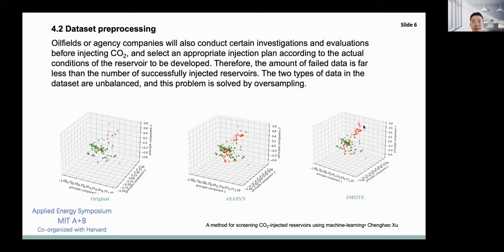Therefore, the amount of failed data is far less than the number of successfully injected reservoirs, and the original data set has a certain imbalance, which is not a good thing for the training of machine learning models and will result in one-sided and inaccurate learning results. A certain way is needed to expand the weaker class data. Two methods are used, namely ADASYN and SMOTE method.